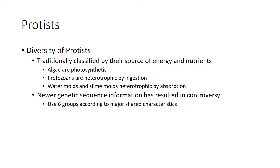Protists are traditionally classified by their source of energy — whether they photosynthesize or whether they're heterotrophic — and also by their nutrients or what type of food they take in. Algae tend to be photosynthetic; they make their own food. Protozoans are heterotrophic; they have to ingest food or get food from an outside source. Water molds and slime molds are also heterotrophic, and they actually absorb — they basically latch on to things and take the nutrients out of them.